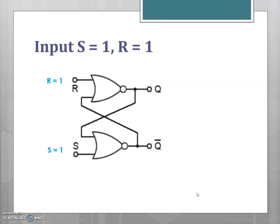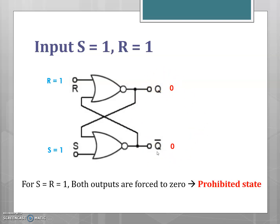For the next case, S equal to 1 and R equal to 1: with one input of the NOR gate equal to 1, the output is forced to 0. The output of both NOR gates is forced to 0. But Q and Q-bar must be complements, so they cannot both be equal. This represents an invalid condition. For S=1 and R=1, since both outputs are equal to 0, it represents a prohibited state.